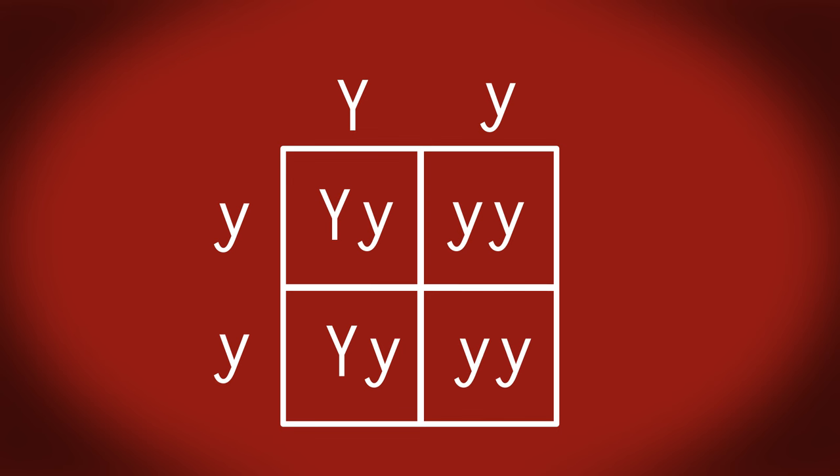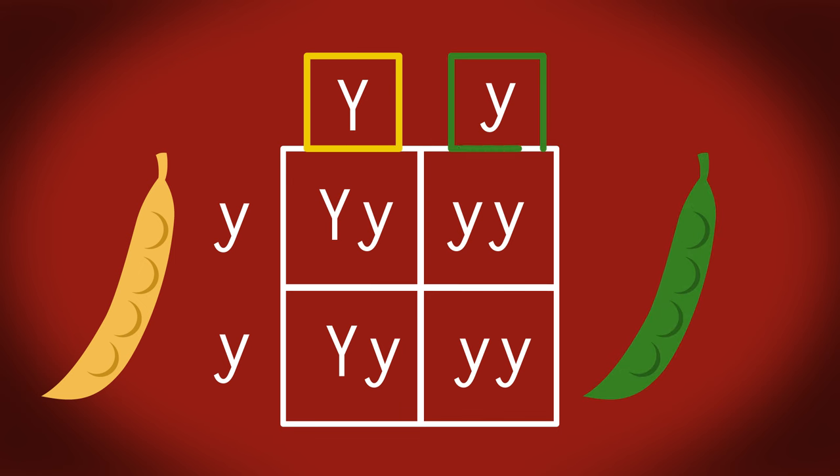It is used by biologists to determine the probability of an offspring having a particular genotype. The genotype represents the genes of the organism and is shown by two letters. A capital letter represents the dominant form of a gene or allele and a lowercase letter represents the recessive form of the gene. So the dominant yellow peapod is shown by capital Y and the recessive green peapod by little y.